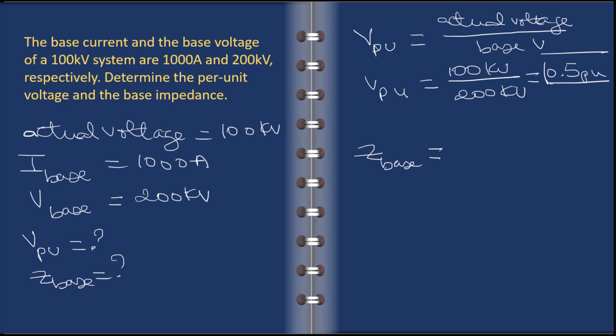Is equal to the base voltage divided by the base current. You know V equals IR, so R equals V over I. So just translate that again here in this case. So Z_base equals V_base divided by the base current.